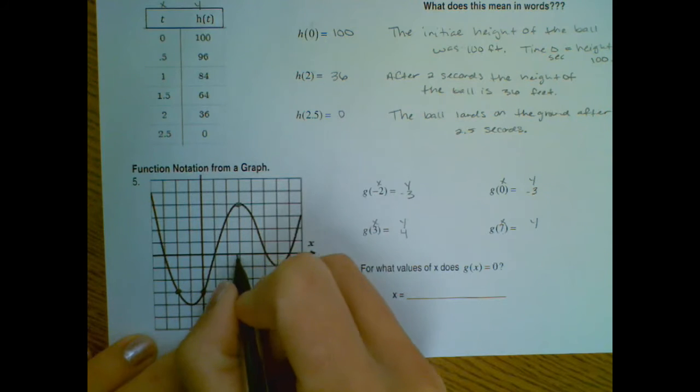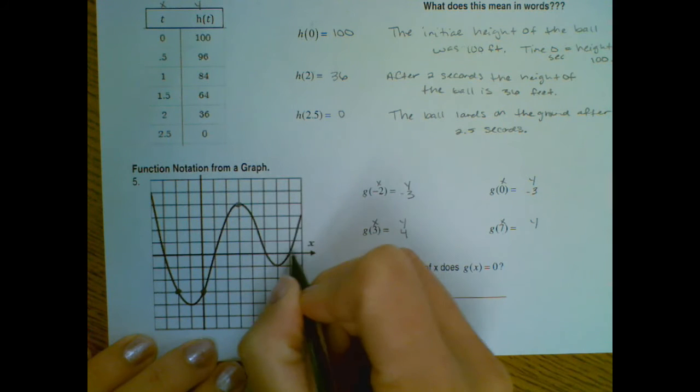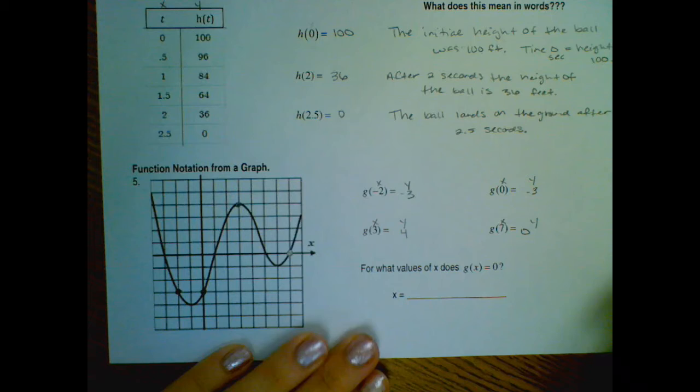And when x is 7, that is a y value of 0.